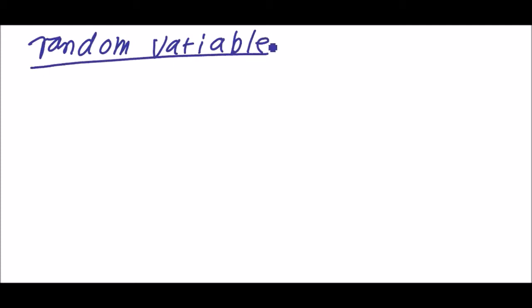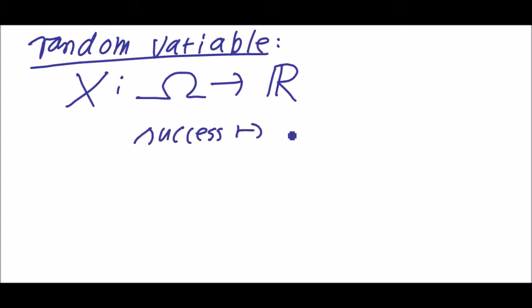So a random variable is a function X that goes from omega to R, to the real numbers. And now we can say okay we take success to 1 maybe and failure to 0. And this is a nice little function and it's called a random variable for omega.